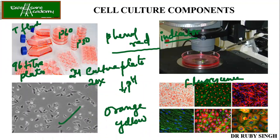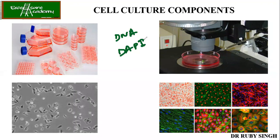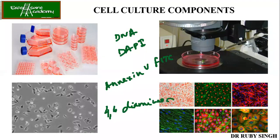Whenever we stain the DNA, the dye used is called DAPI. To stain green there is something called Annexin V-FITC, and for red there are other dyes. Please remember these colors — many dyes exist but these are the ones routinely used. For DNA staining it is DAPI, and for green it is Annexin V-FITC.